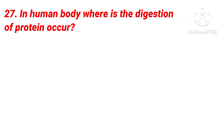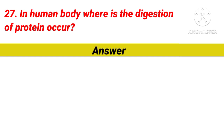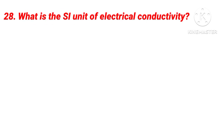Question 27: In the human body, where does the digestion of protein occur? Answer is the Small Intestine. Question 28: What is the SI unit of Electrical Conductivity? Answer is Siemens.